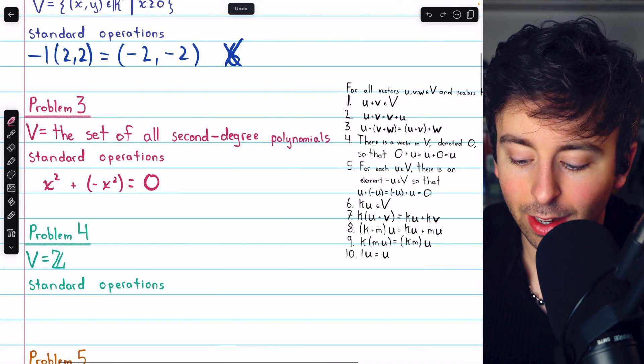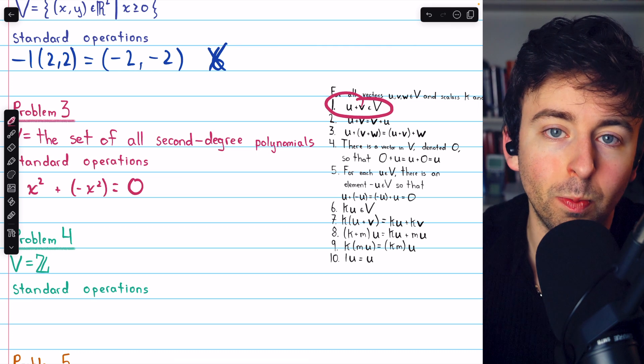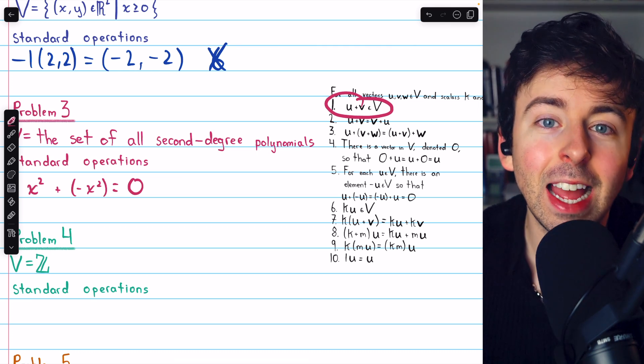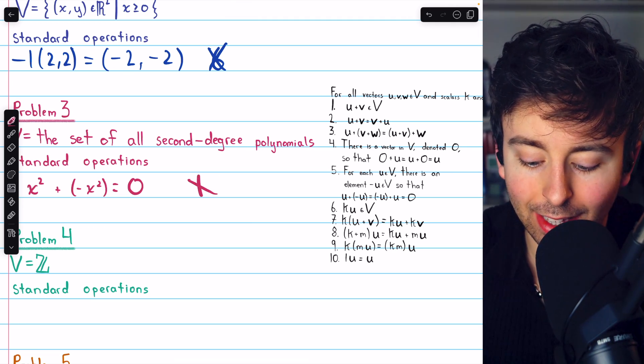so zero is not in the set. And so we have not satisfied closure. It's not the case that the sum of any two vectors is in the set here. Hence, it's not actually a vector space. We see that it violates axiom 1.